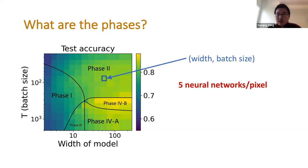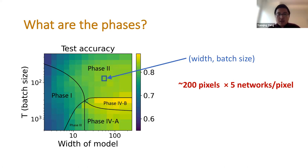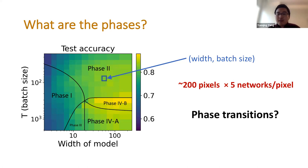Each pixel in this 2D phase plot represents one experiment with a specific width and a specific mini-batch size. We trained five networks for each pixel and plotted the average test accuracy shown in the color bar. There are about 200 pixels in this plot with five networks each, giving about 1,000 networks total. We did this to show a large collection of experiments so we can find all of these phases.